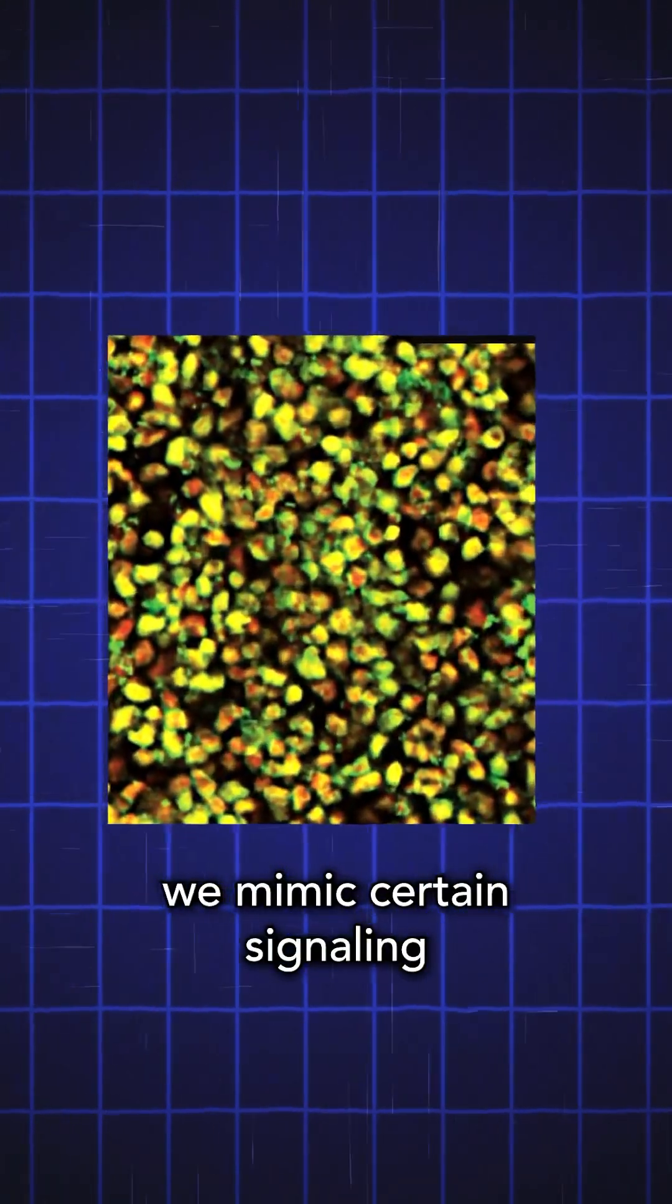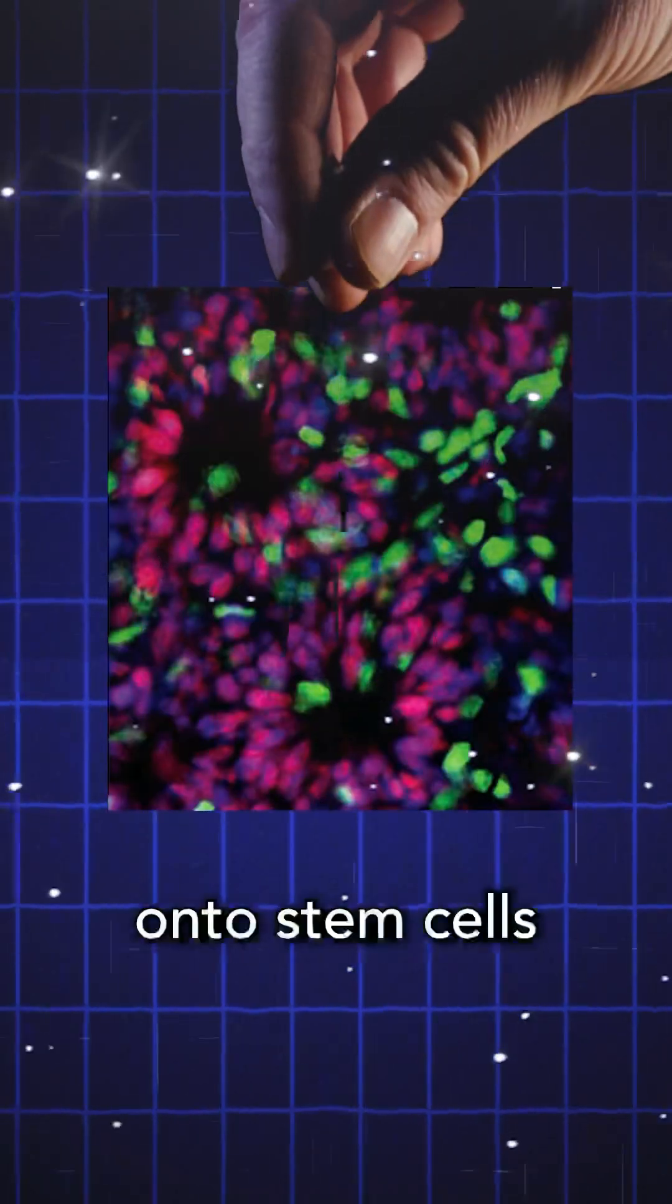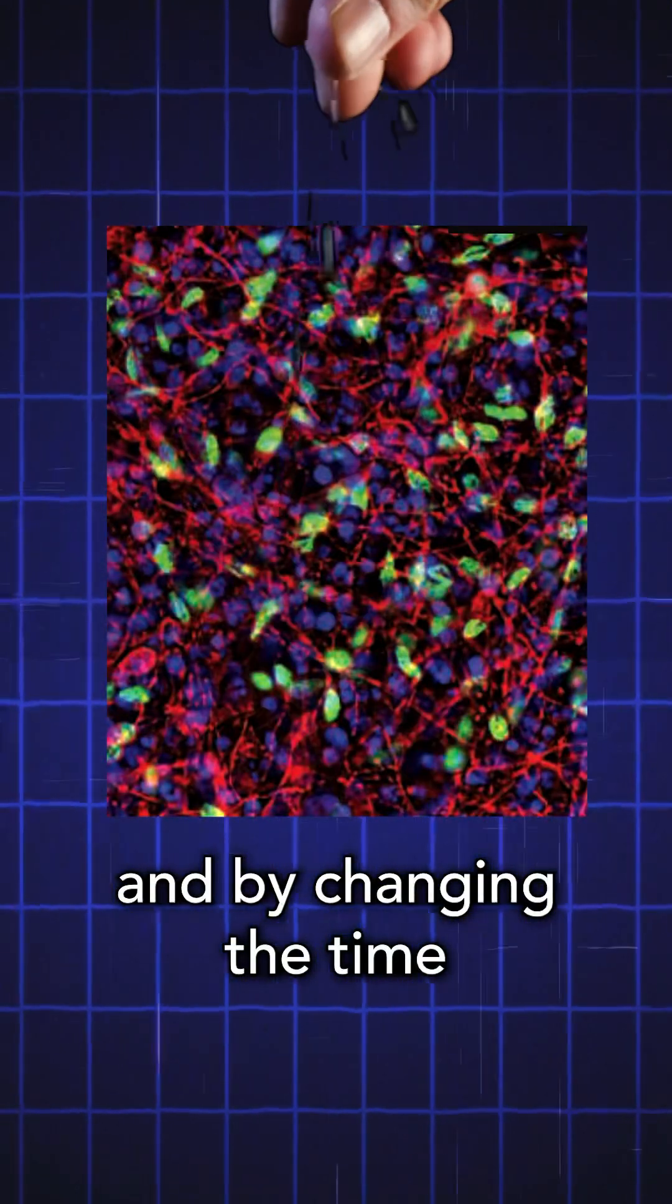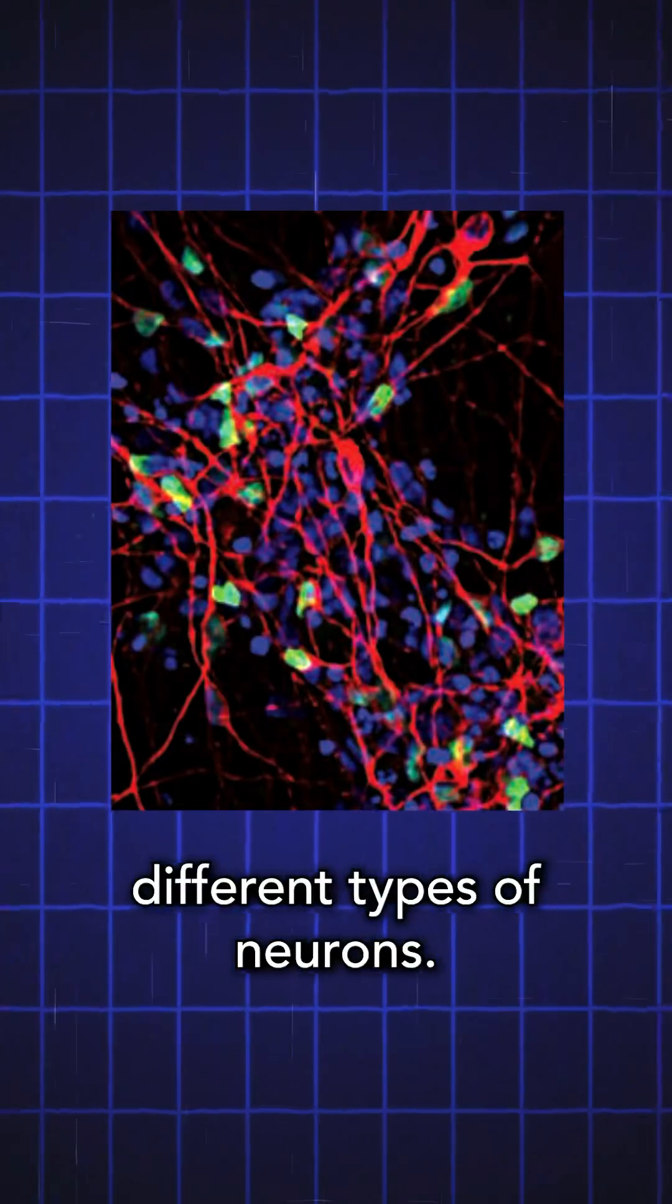But to do that, we mimic certain signaling by sprinkling chemicals onto stem cells. And by changing the time and amount of those sprinkling factors, we can generate different types of neurons.